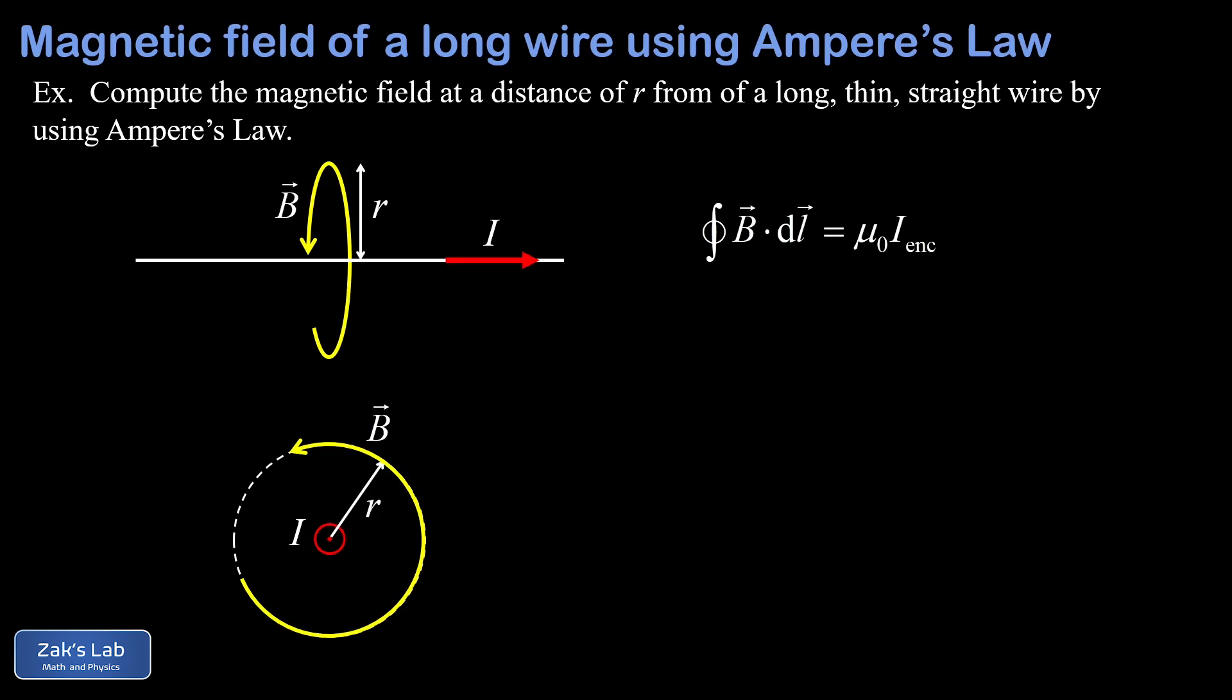But in this video, we're just going to tolerate some logical imprecision because our simple line current still makes a good toy problem for applying Ampere's law. The first critical step in applying Ampere's law is to define the closed curve for the path integral, and we call that an Amperian loop.